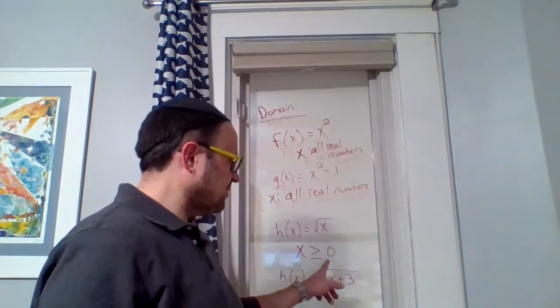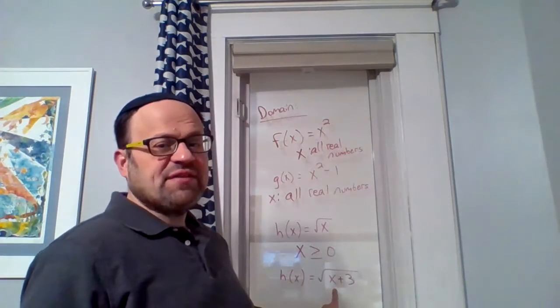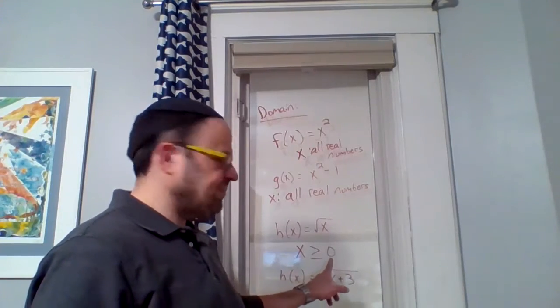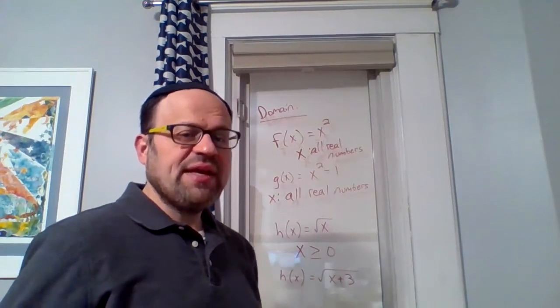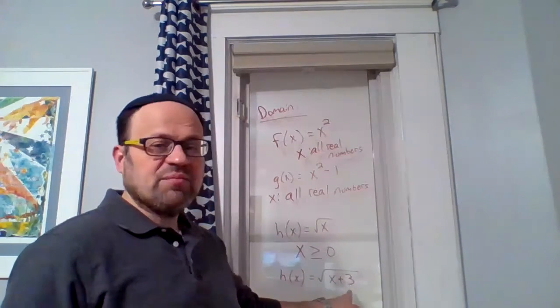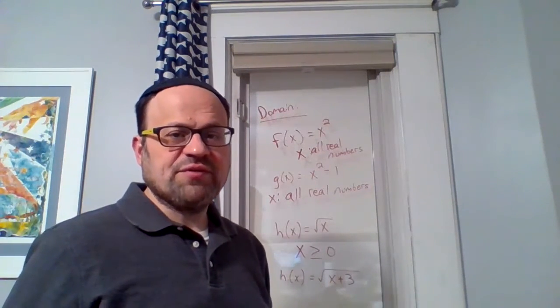Can x still equal zero? Sure, I can have the square root of zero plus three, but can x be less than zero? Test it out. Use some logic. What if x is negative one? Well, negative one plus three is two. I can have the square root of two.